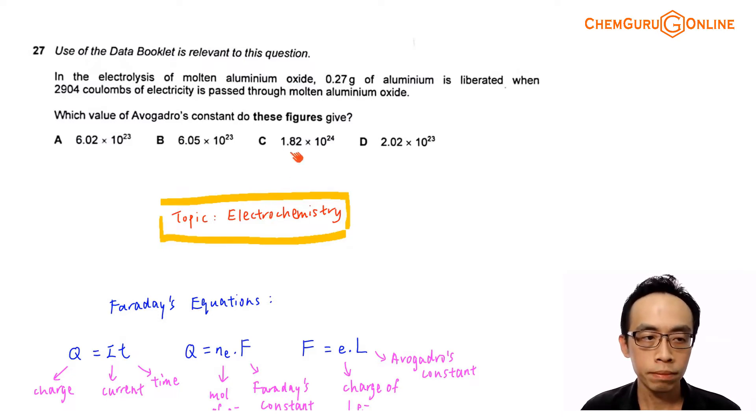Now question 27, the use of the data booklet is relevant to this question. In the electrolysis of molten aluminum oxide, 0.27 gram of aluminum is liberated when 2904 coulombs of electricity is passed through molten aluminum oxide. So which value of Avogadro's constant do these figures give? So we have 4 options, and we want to solve for your Avogadro constant.